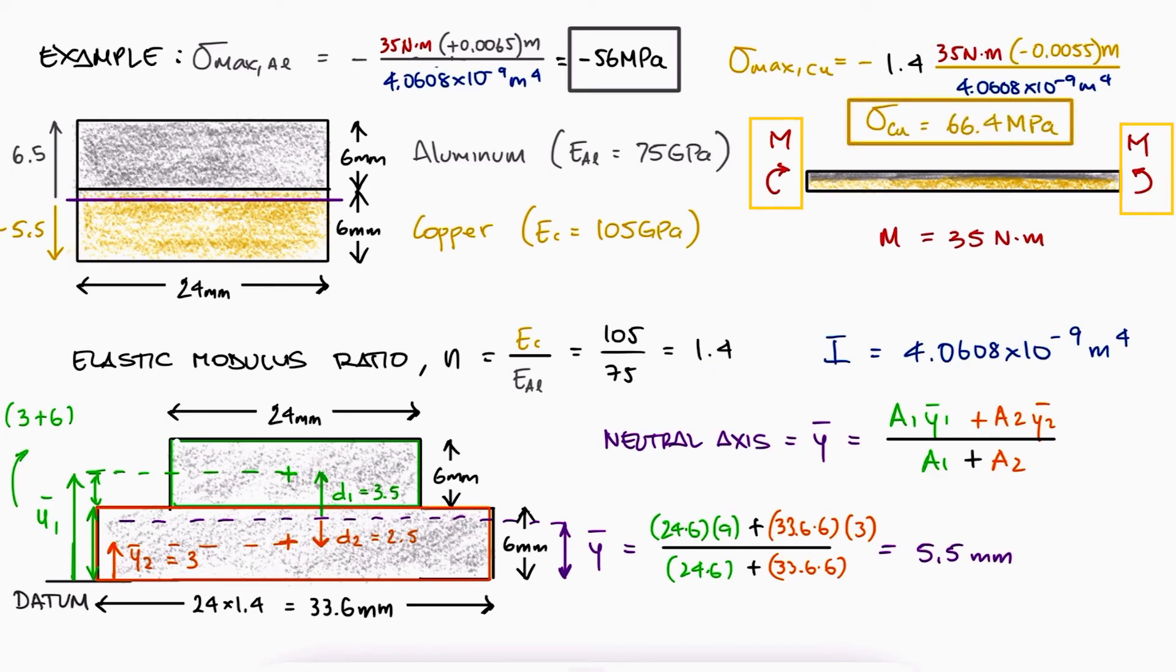For a positive moment, it makes sense that the top surface is under compression and the bottom surface is under tension. And since the copper has a higher resistance to deformation, it makes sense that the magnitude of the stress is higher in the copper. Of course, this is only true because the two sheets of metal were equally thick. This would not be as clear for any other type of cross-section composite material. For more examples on bending stress in composite materials, as well as the other topics of the Mechanics of Materials course videos, make sure to check out the links in the description below.